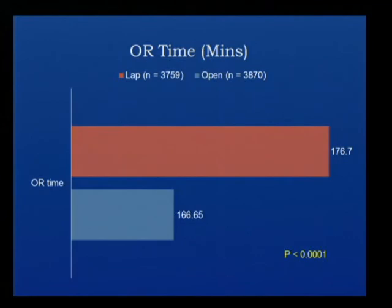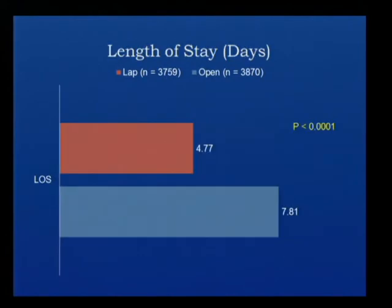Comparing operative time, the laparoscopic group was higher as expected at 176 minutes, compared to 166.65 minutes in the open group — significantly different with p-value less than 0.001. Length of stay was also significantly different: 7.8 days in the open group vs. 4.77 days in the laparoscopic group, though the open group included patients with more comorbidities.